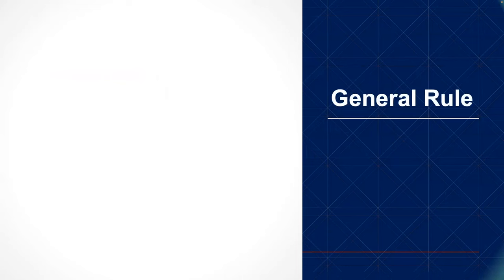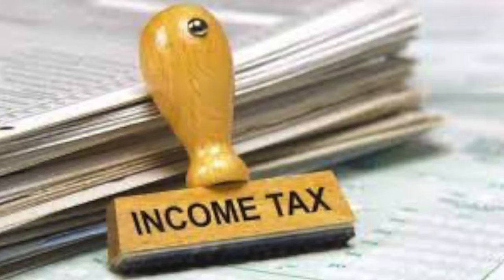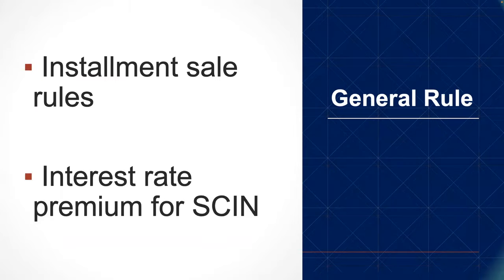The general rule for self-canceling installment notes is that they're subject to the installment sale obligations under the income tax rules. What that means is when you sell the asset, you only pay tax on the receipt of payments under the note. Some of those payments may be in the form of interest, and some may be in the form of capital gains or return of your basis. You're able to defer out the income tax consequences over the term of the note.